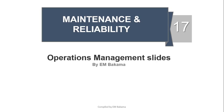Hello guys, welcome to our online tutorial for operation management. Today we're talking about chapter 17, which is about maintenance and reliability. As a reminder, this is based on the book 'Operations Management: Supply Chain and Sustainability' by Jay Heizer and Barry Render, the 11th edition.